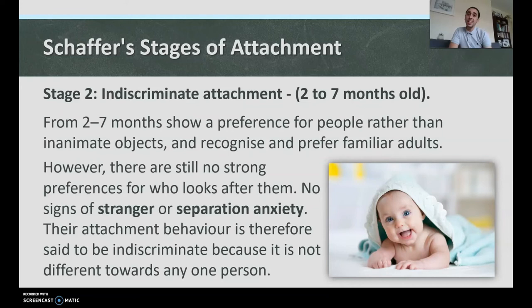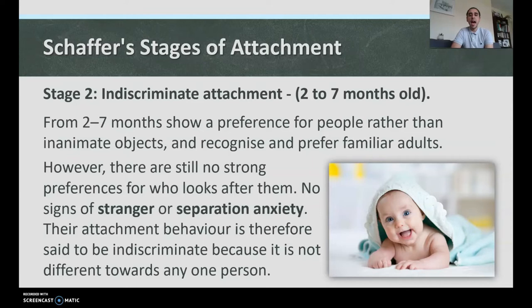Stage two is the indiscriminate attachment stage, from two to seven months. Infants show a preference for people rather than inanimate objects, and recognize and prefer familiar adults. However, there is still no strong preference for who looks after them — no signs of stranger or separation anxiety. Their attachment behavior is therefore said to be indiscriminate because it is not different towards any one person.